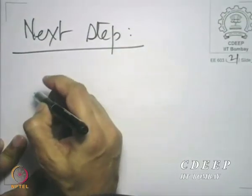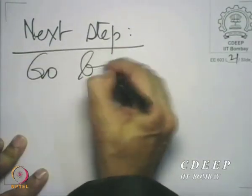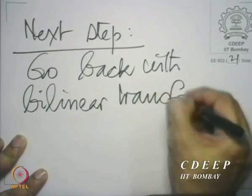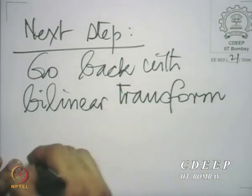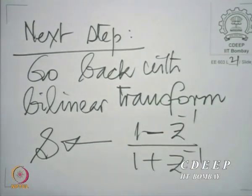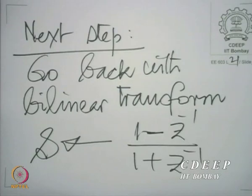Once we have designed the analog filter, the next step is to go back with the bilinear transform. In the analog domain, the variable s is replaced by (1 minus z inverse) divided by (1 plus z inverse). Therefore, the rational analog filter as designed is converted into a rational discrete time filter, and the specifications are carried as they are.